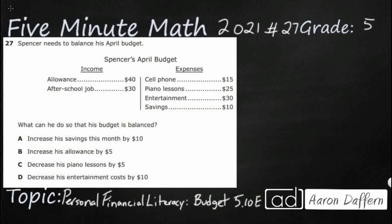Hello and welcome to 5-Minute Math. Today we are looking at the 5th grade concept of budget. This is a part of personal financial literacy, which is standard 5.10e in the great state of Texas. We are using item number 27 off the 2021 released STAAR test.